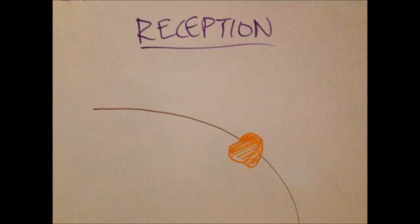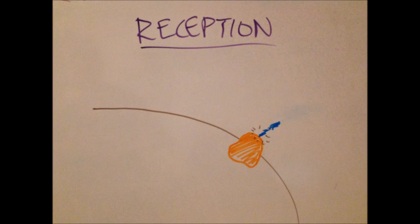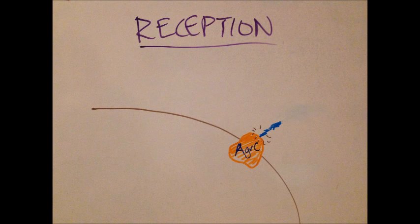Reception begins once our AIP friend reaches a receptor on a bacterial cell. Essentially, the AIP binds to a membrane-bound receptor called the accessory gene regulator cognate receptor. But that's really annoying to say more than once, so we're just gonna call this receptor the AGRC receptor. Yep, that's much better.